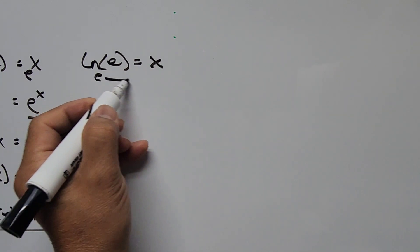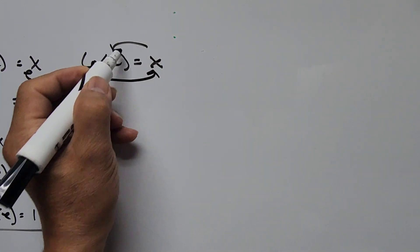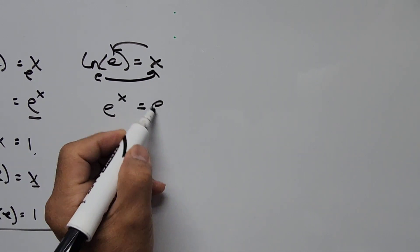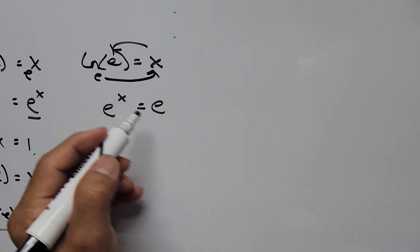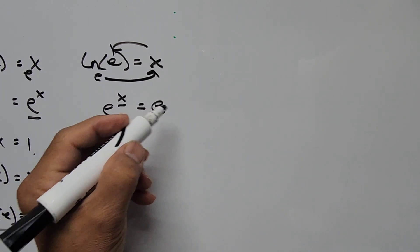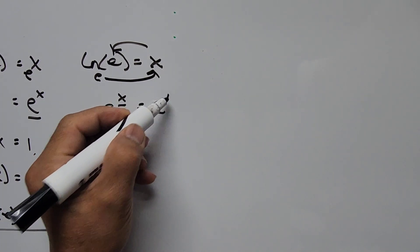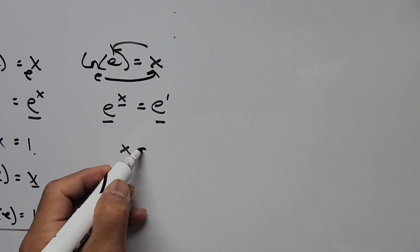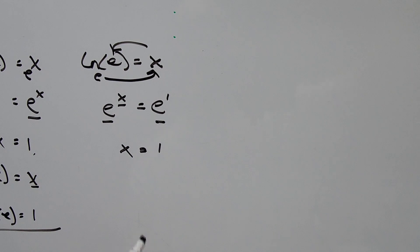We have e to the power of x is equal to e. So we have e to the power of x equals e. And once again, the exponent here is x, and e here is having an invisible exponent of 1. We have the same base, so therefore x is equal to 1.